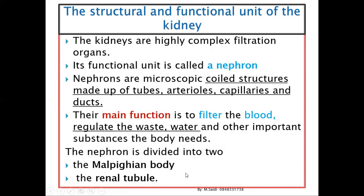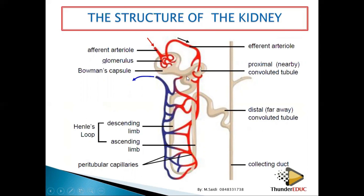Think of it like a human being — the upper part, like the head down to the neck, is the Malpighian body, and the remaining part becomes the renal tubule. So the Malpighian body is the upper portion, and the rest becomes the renal tubules.